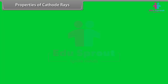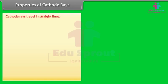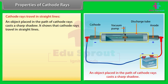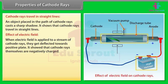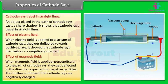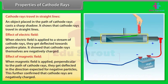Properties of cathode rays: Cathode rays travel in straight lines — an object placed in their path casts a sharp shadow. When an electric field is applied, cathode rays are deflected towards the positive plate, showing they are negatively charged. When a magnetic field is applied perpendicular to their path, they deflect in the direction expected for negative particles, further confirming that cathode rays are negatively charged.